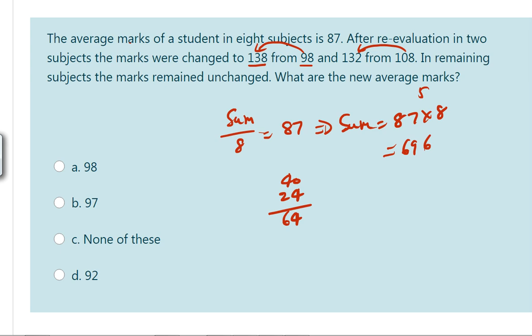Overall marks added are 64. So 696 plus 64 equals 760.